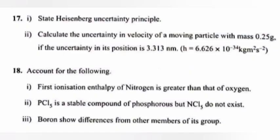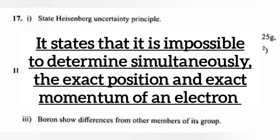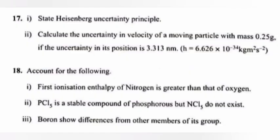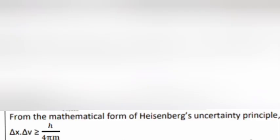Question 17, part 1: State Heisenberg uncertainty principle. Answer: It states that it is impossible to determine simultaneously the exact position and exact momentum of an electron. The mathematical form is Δx × Δv ≥ h / (4πm). Part 2: Calculate the uncertainty in velocity of a moving particle with mass 0.25 grams if the uncertainty in its position is 3.313 nm.